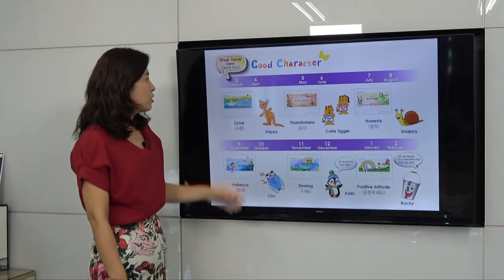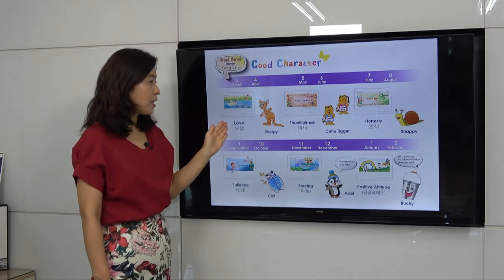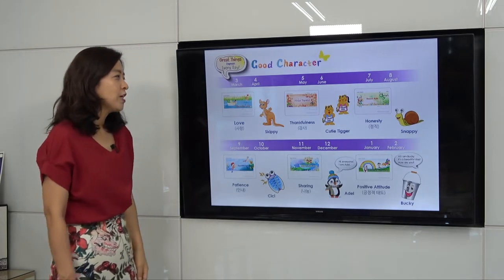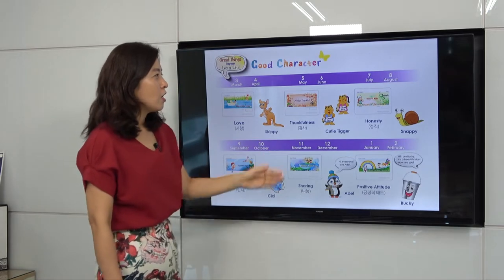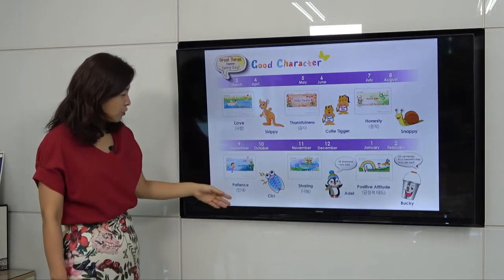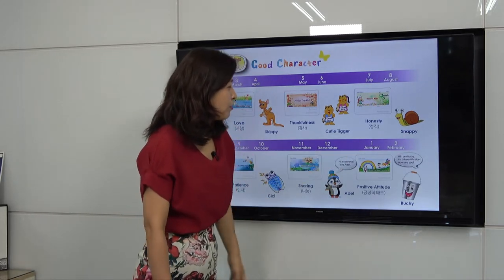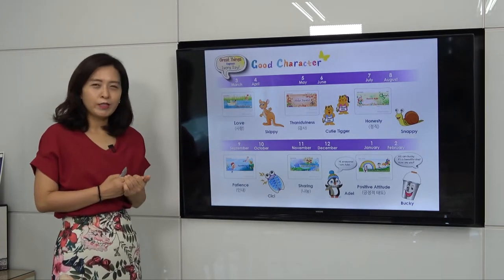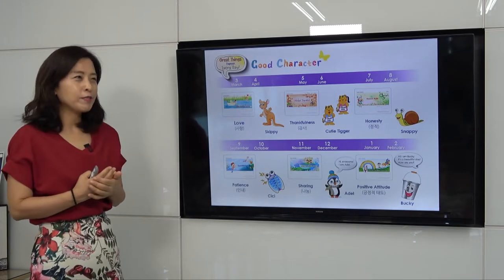For March and April, our theme is love and our character is Skippy the kangaroo. For May and June, it's thankfulness. July and August is honest. September and October is patient. November and December is sharing. January and February is positive attitude. The whole program has three different stages — stage one, two, and three — and six different themes.